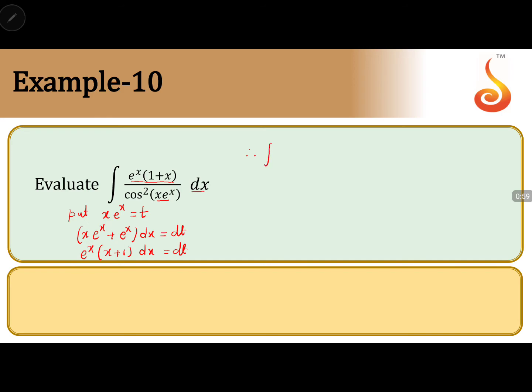Now 1 by cos squared t can be written as secant squared t times dt. What is secant squared t integration? It is tan t plus c. And tan of what is t? t is nothing but x e to the power x plus c.